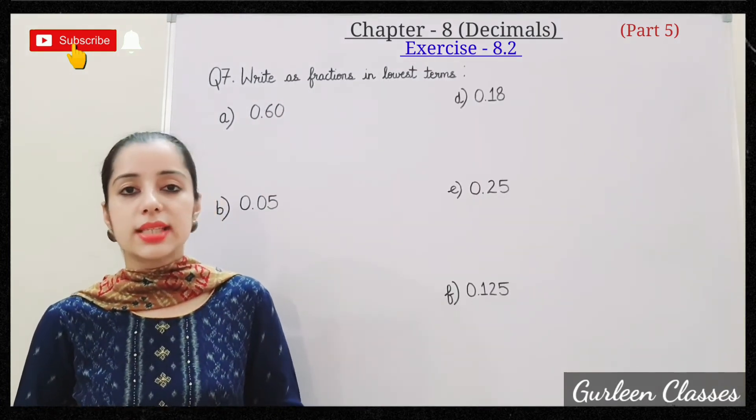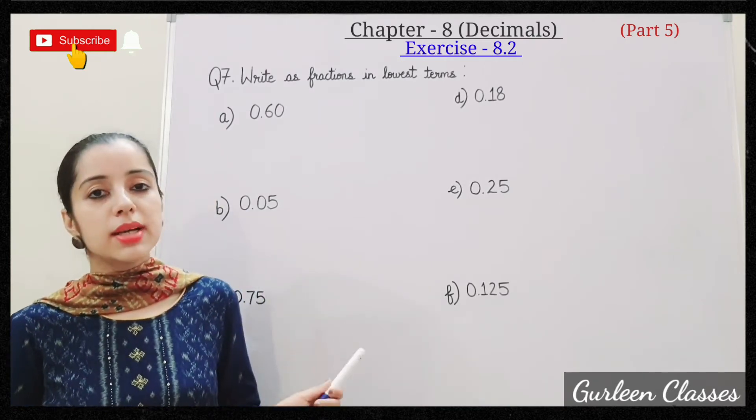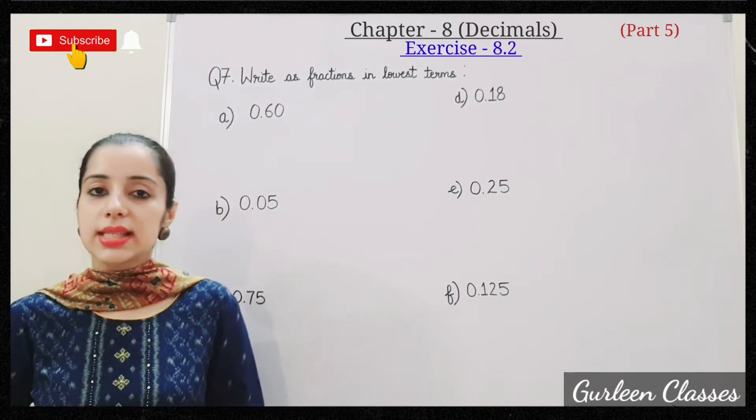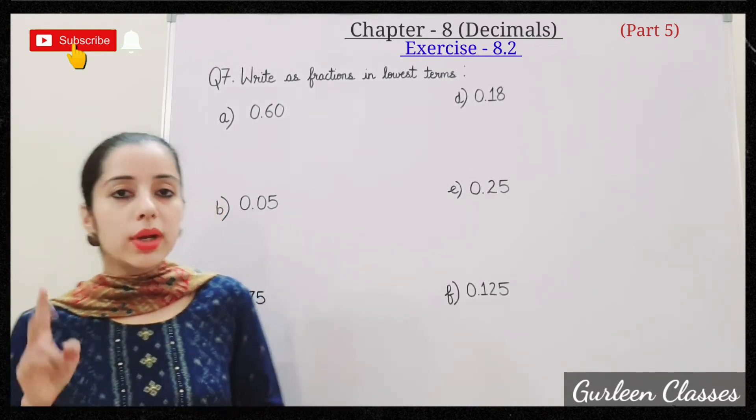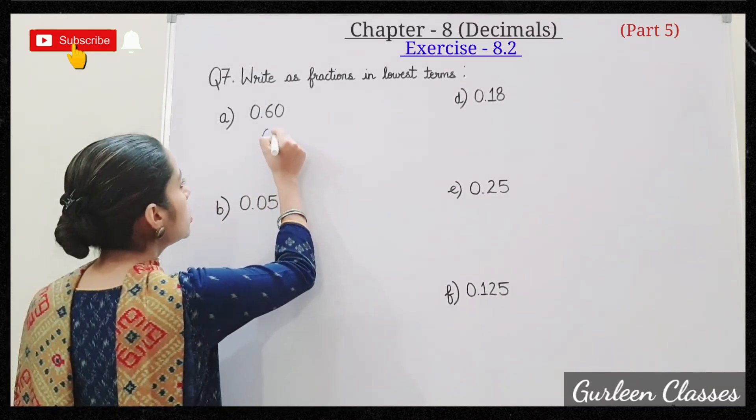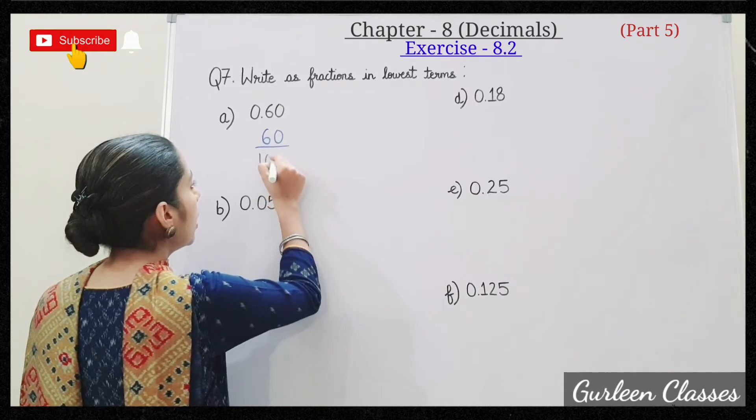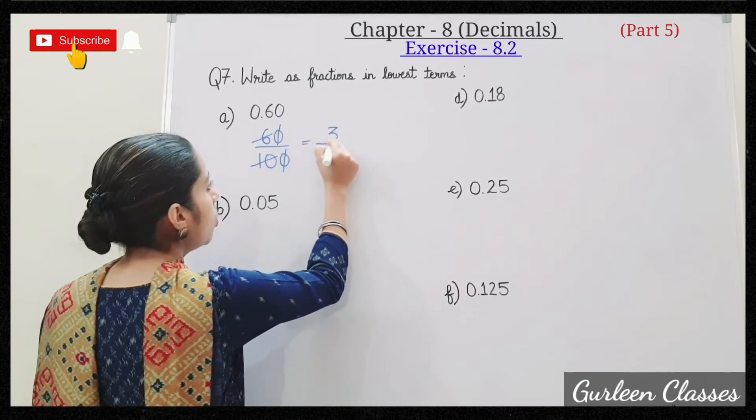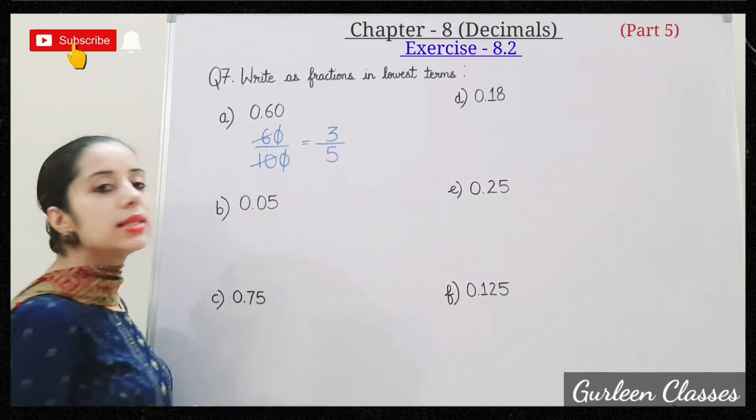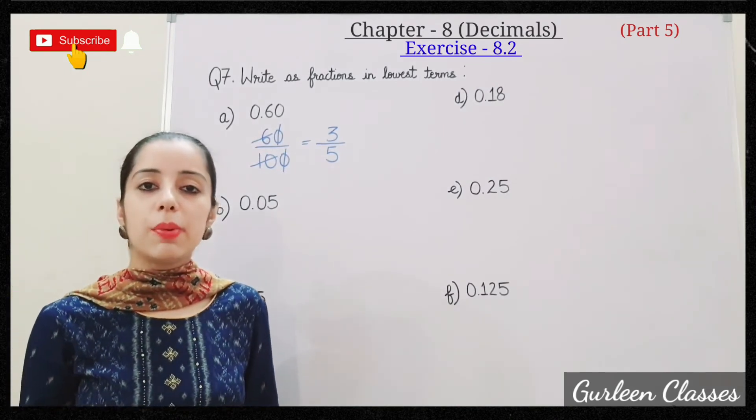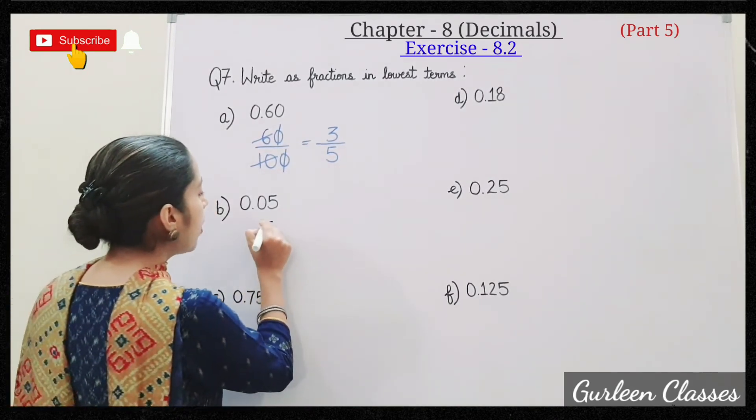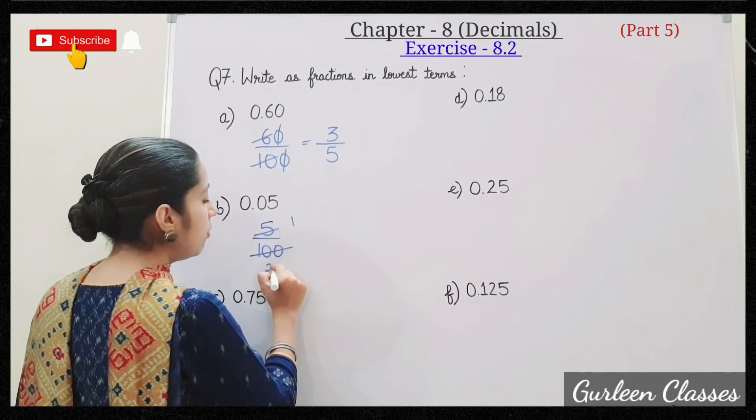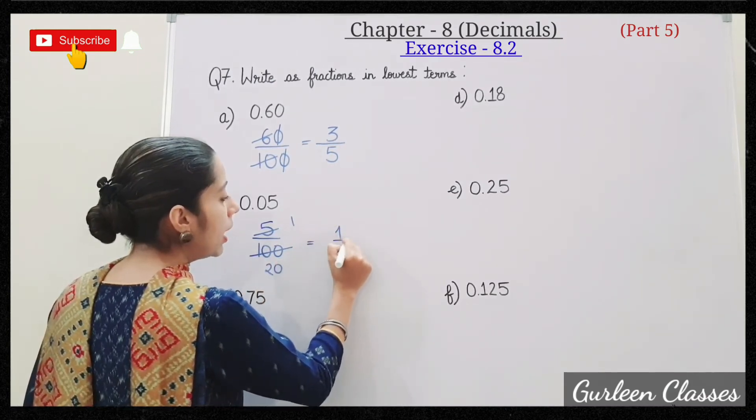Question number 7: write as fractions in lowest terms. We have to convert these decimal numbers into fractions and then convert into lowest terms. A: 0.60. After decimal point, we have 2 digits. So in the denominator we will put 2 zeros. So 60 upon 100. 20 threes are 60, 20 fives are 100. Answer is 3 upon 5.